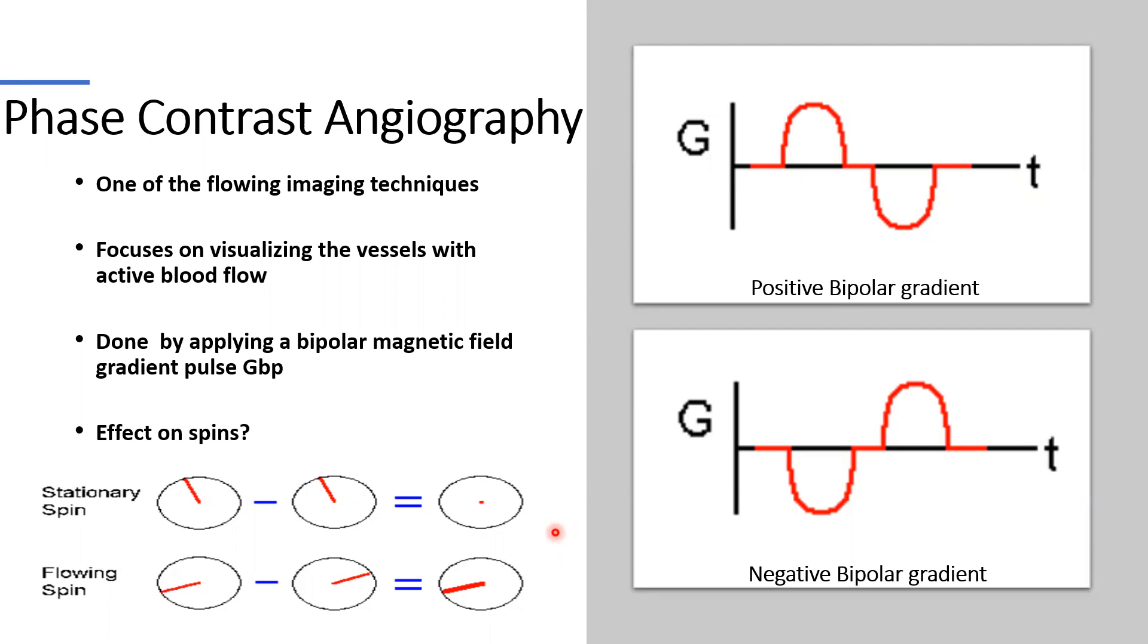But when two imaging sequences are performed with the first sequence involving the positive bipolar gradient pulse and the other involving the negative bipolar gradient pulse, then the raw data from the two pulses is subtracted and the signal from stationary spins are cancelled out.